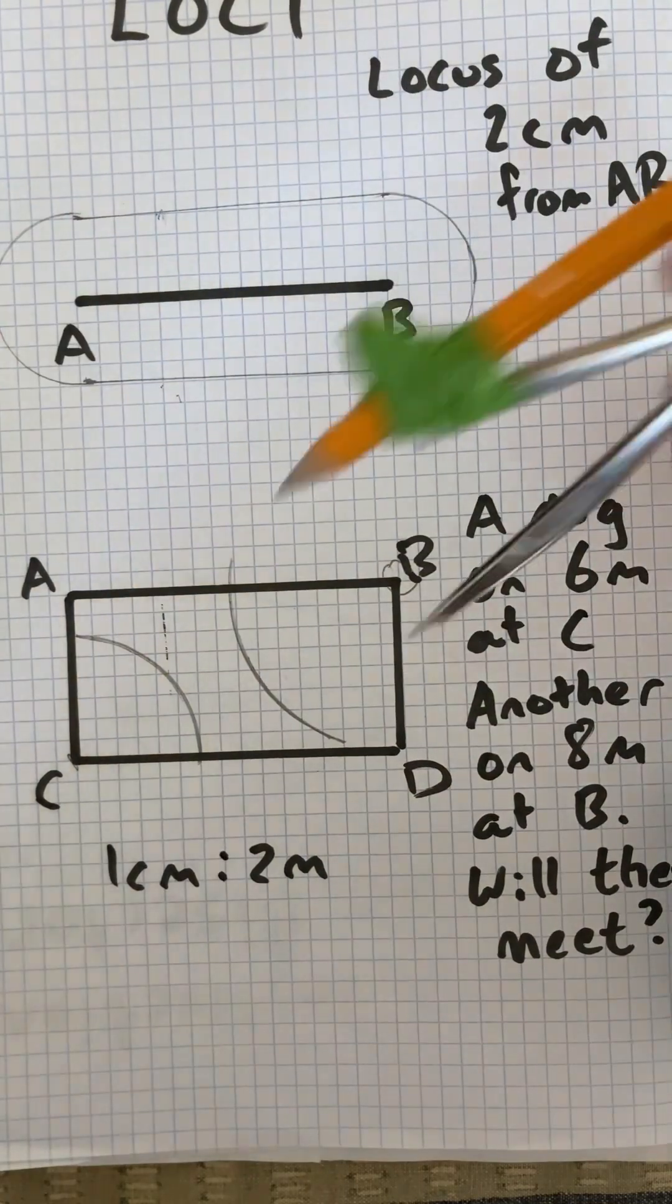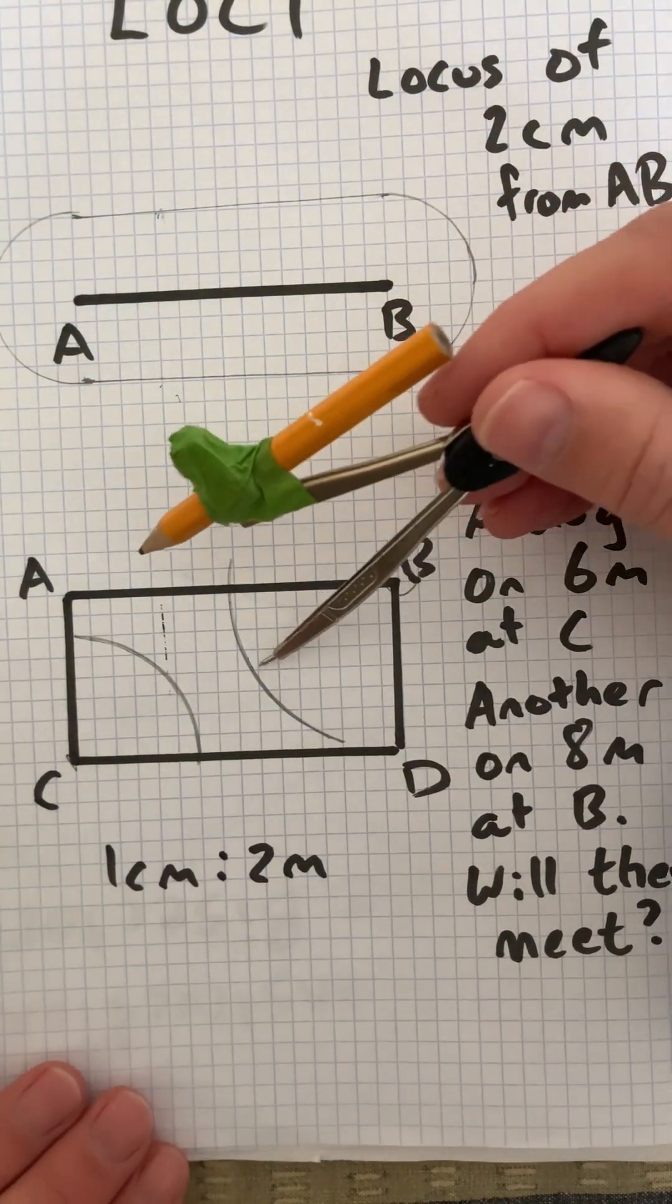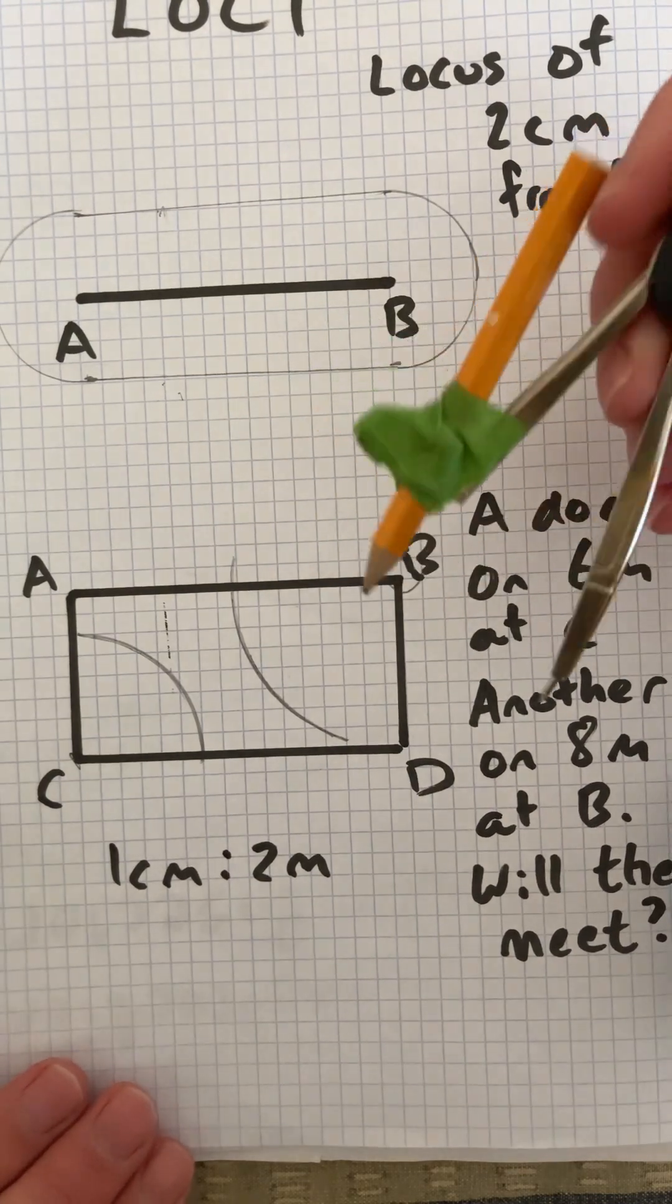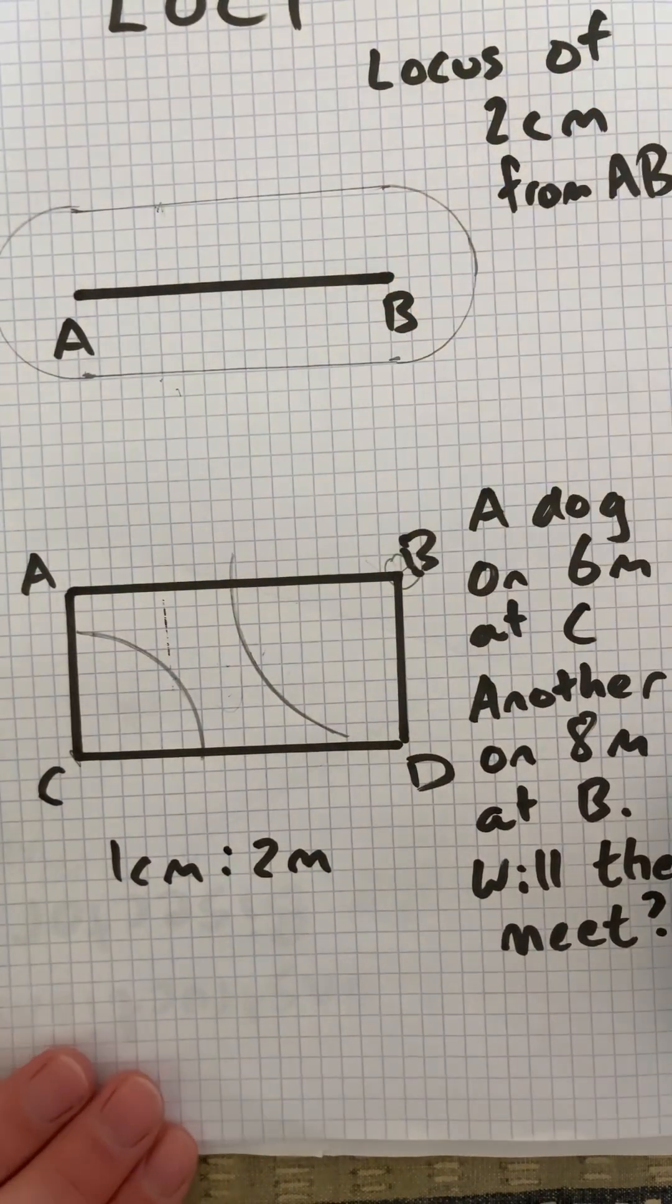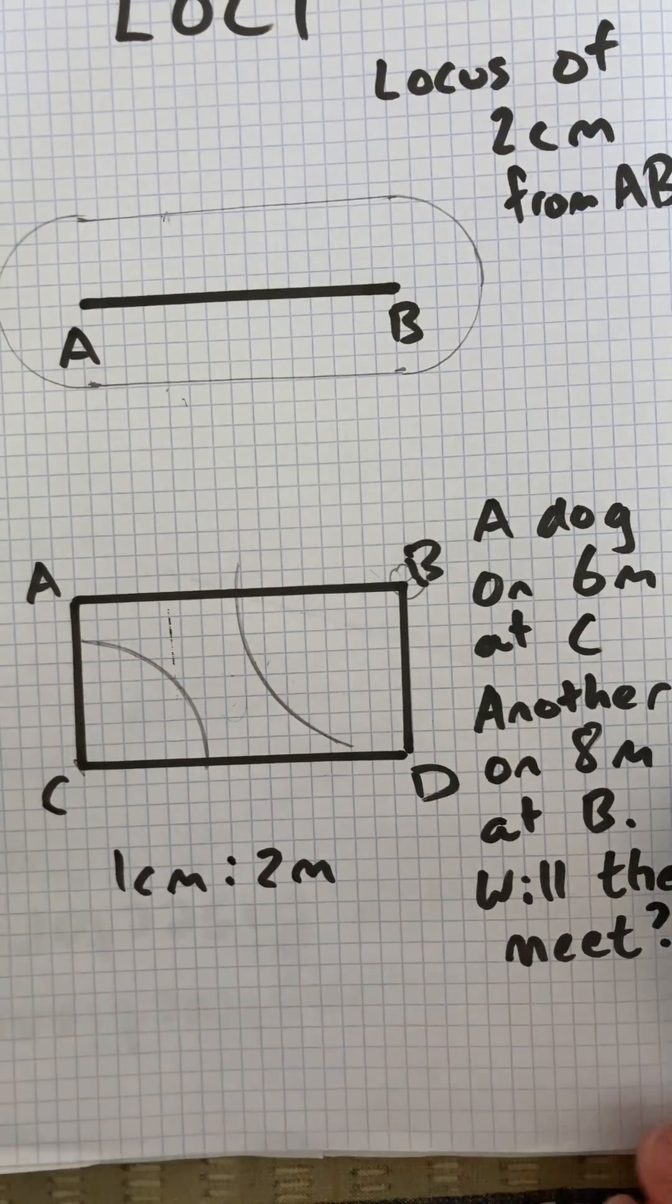But no, they don't overlap. The furthest the leads would be is 8m there, 6m there. They're not going to meet. That's loci. Thanks.